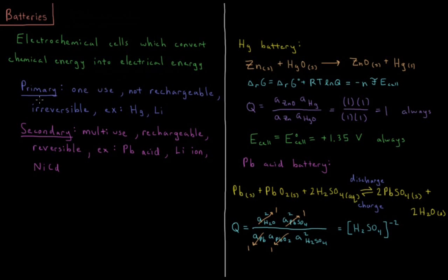Two different kinds of batteries that might be of interest are primary and secondary. A primary would be a one-use battery, something that is not rechargeable, something whose reaction is irreversible. An example of this would be a mercury battery or a lithium battery. Note, not the lithium-ion battery which is so ubiquitous in today's electronics.